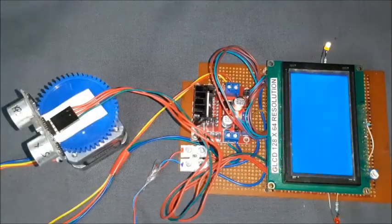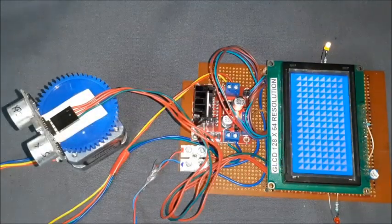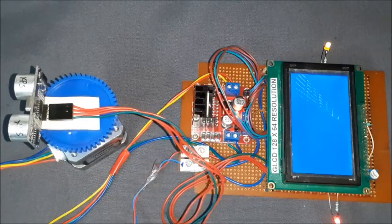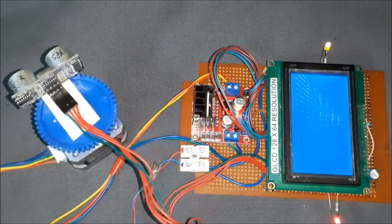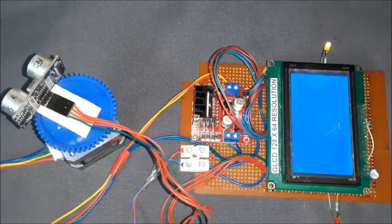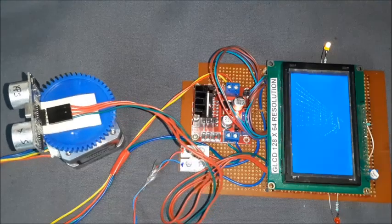Then the stepper motor oscillates and the distance of obstacle is measured by ultrasonic sensor for every step. The lines are drawn on the GLCD proportional to distance measured by the ultrasonic sensor.